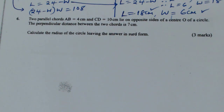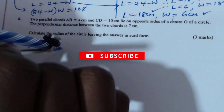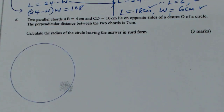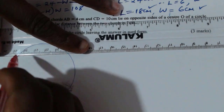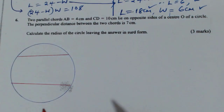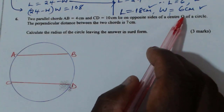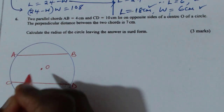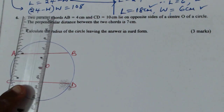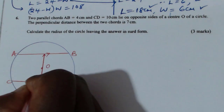The first thing is to draw a sketch of that circle. The first chord AB is 4 cm, indicated here. This is A, this one is B, and this is chord CD. I will let the center of the circle be located at that point. The perpendicular distance between the two chords is 7, and this perpendicular distance passes through the center. Remember, these chords are parallel to each other, so the distance between them is constant.